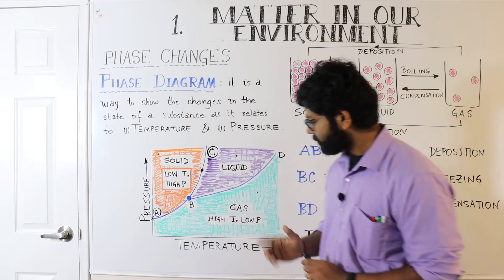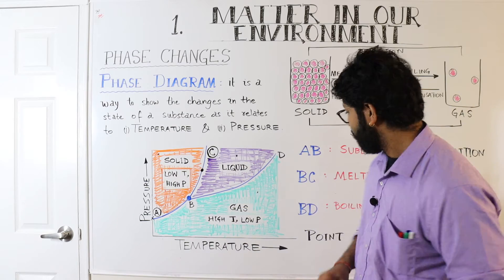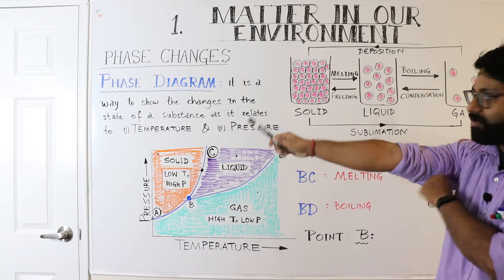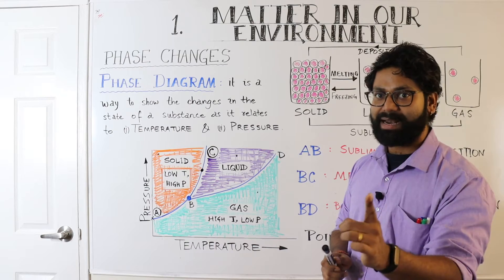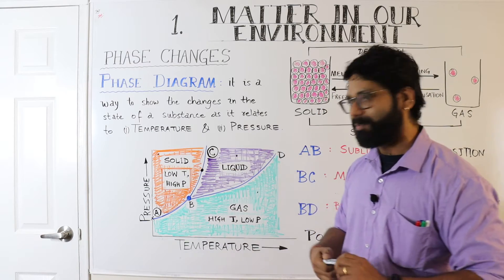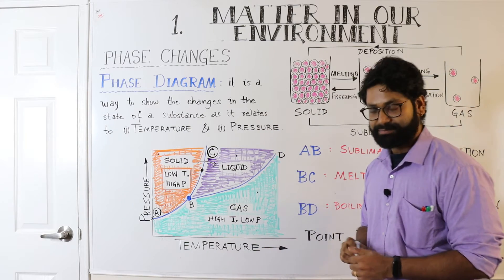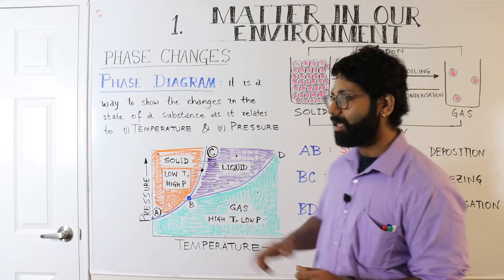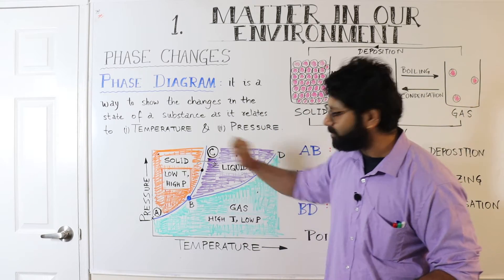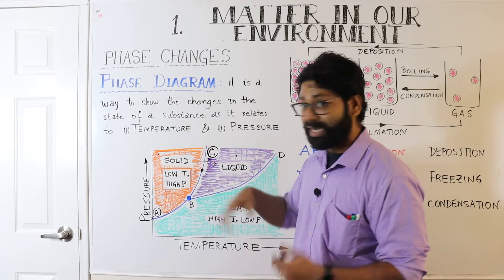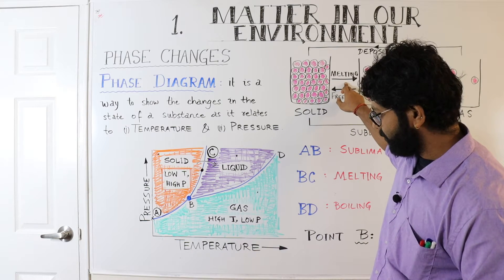This boundary is special because you can go from solid into liquid or from liquid into solid. The process of going from solid to liquid is melting. So if we move along the BC line from solid to liquid, that is melting. If we go from liquid to solid, that is freezing. This process occurs along the BC line.